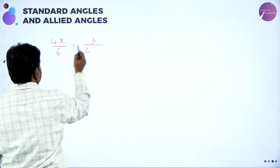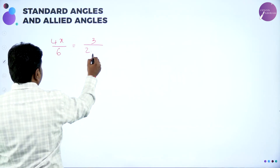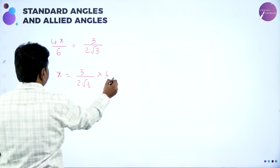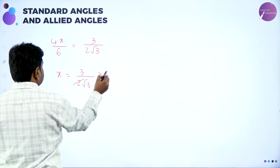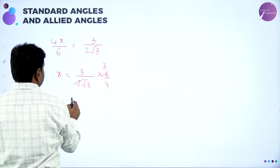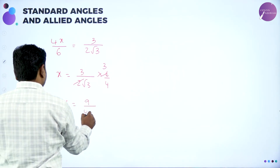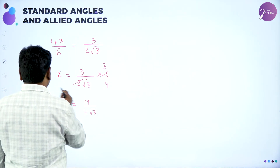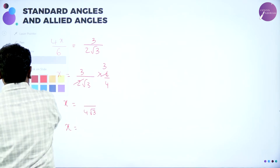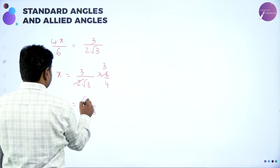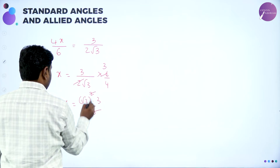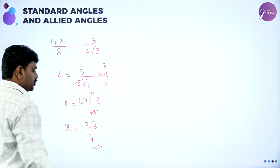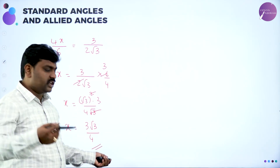So x = 3/(2√3) · (6/4). Simplifying: 3 × 6 = 18, divided by 2 × 4 × √3 = 8√3, giving 9/(4√3). Writing 9 = (√3)² · 3, one √3 cancels with the denominator, giving x = 3√3/4. Or if you rationalize, you'll get the same result.